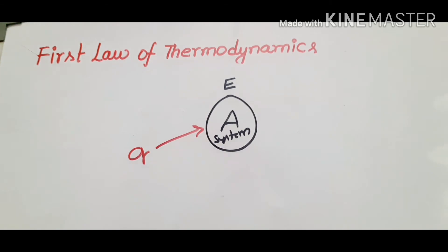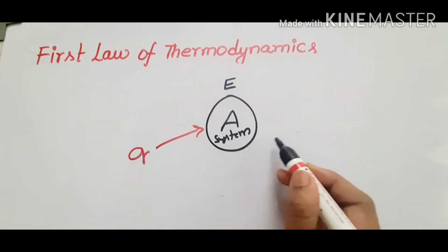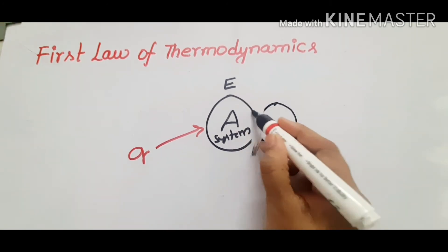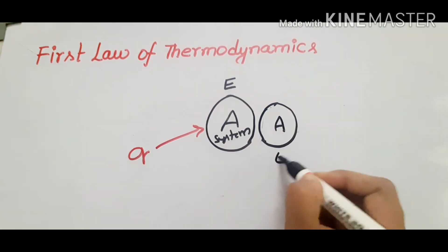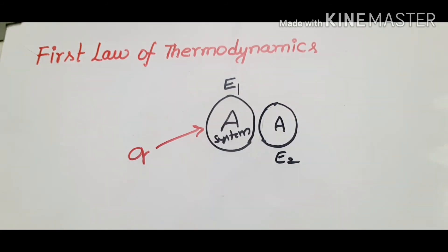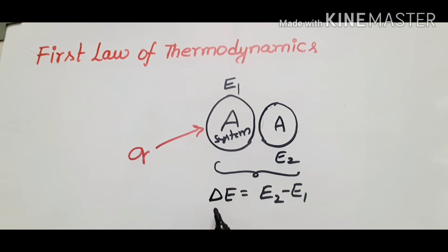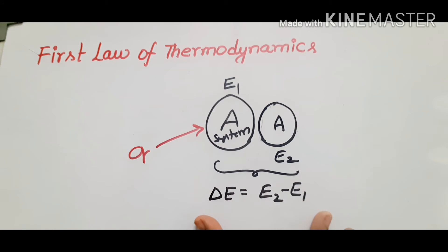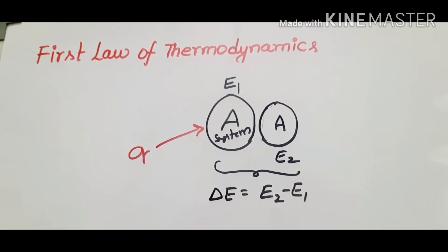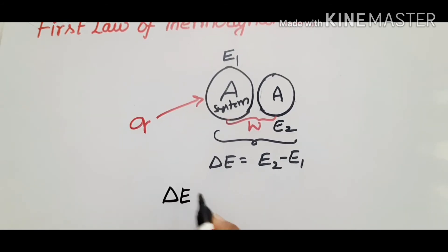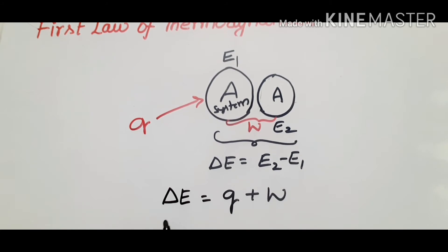Q is the heat energy. The system will absorb it from the surroundings. There will be work done — displacement. So the system will move. If the initial energy of the system is E1 and the final energy is E2, then the difference delta E equals E2 minus E1. That is the energy change of the system.